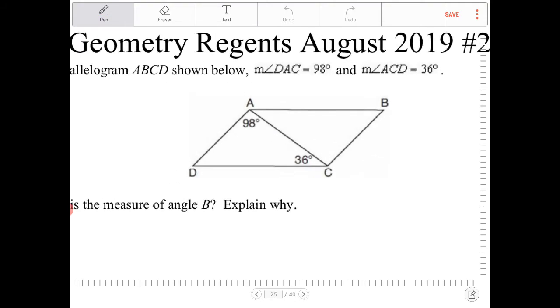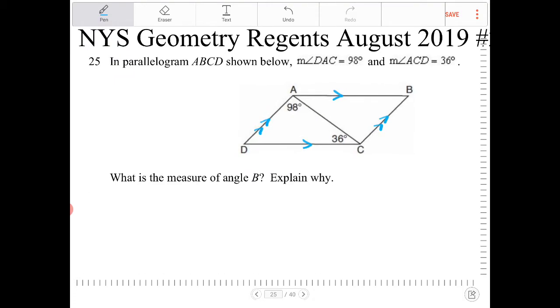So ABCD is a parallelogram, which means that opposite sides are both parallel and congruent. I'm just gonna label that just to remind us, right?